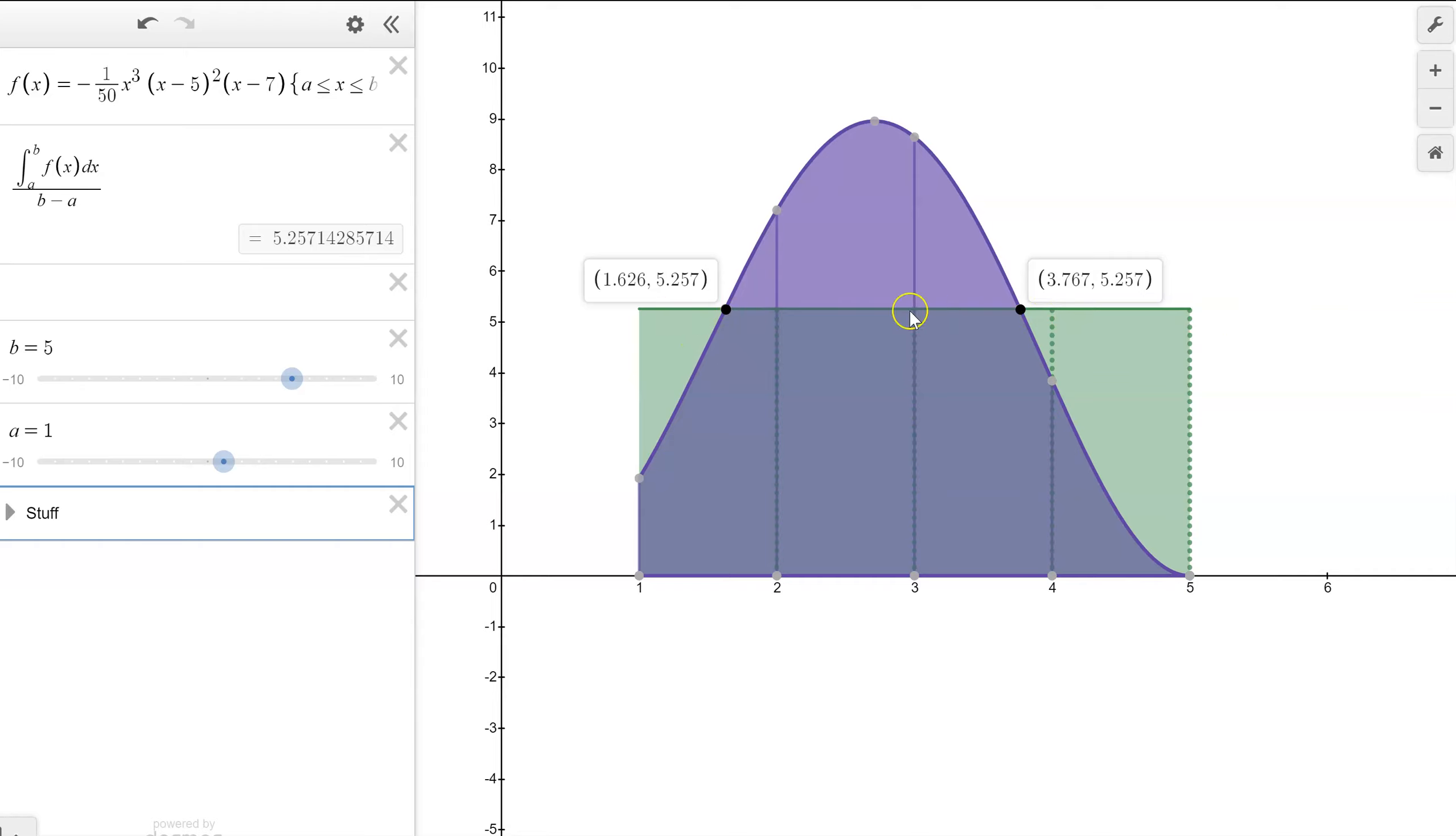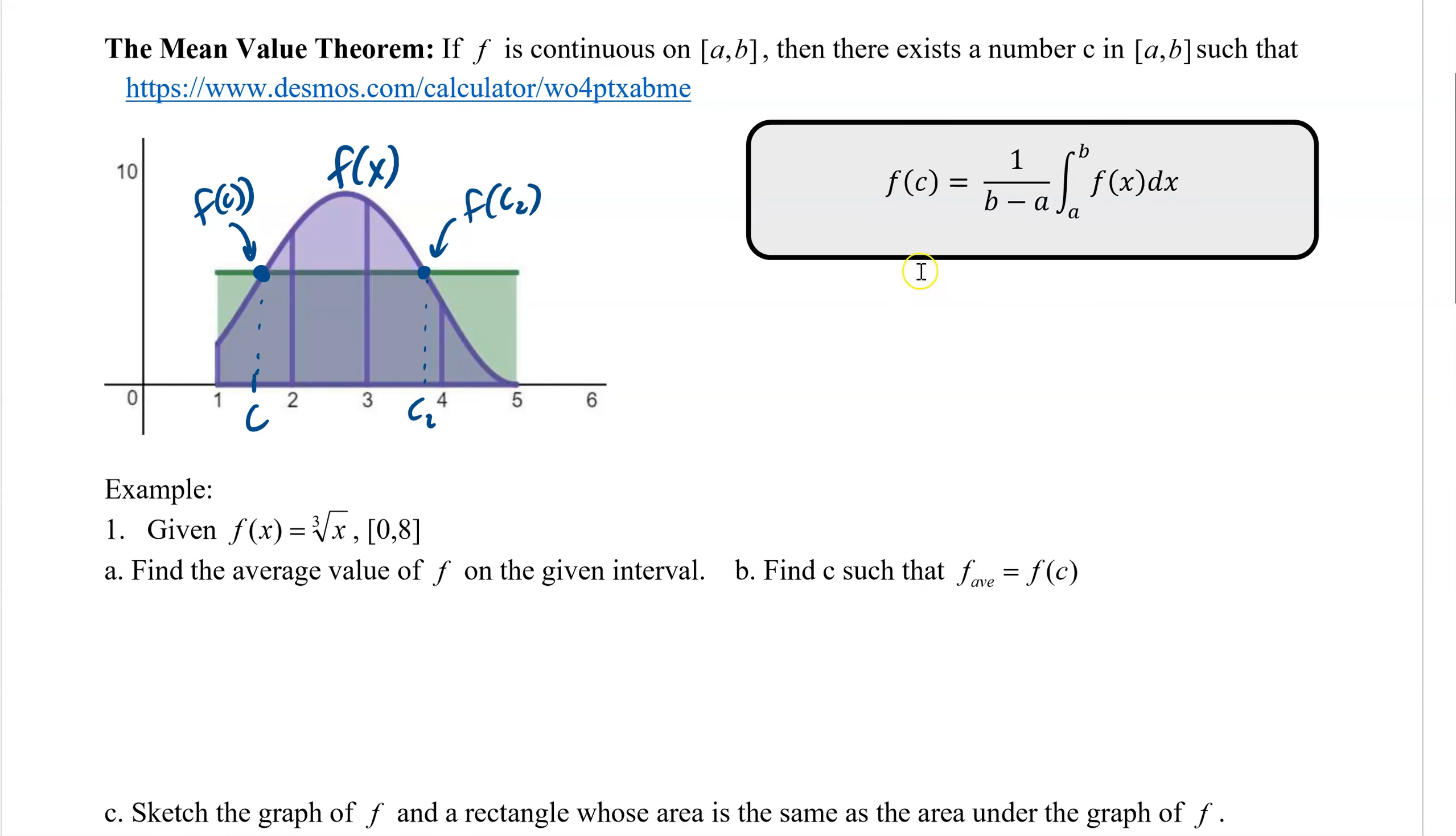It's the same basic idea. If it's between it and the function is continuous, that average value has to intersect at at least one point there. We have some x value that we can plug into our function that would be exactly the same as what we get for the average value.